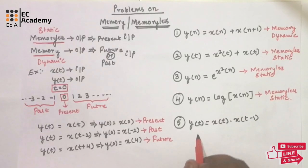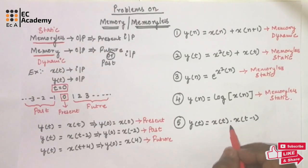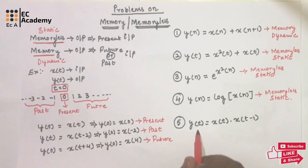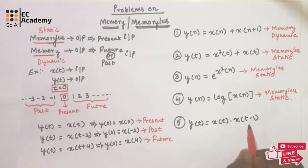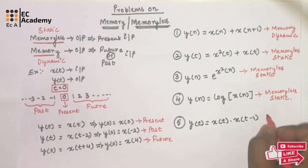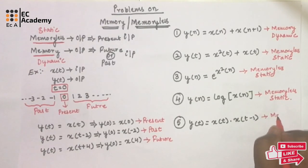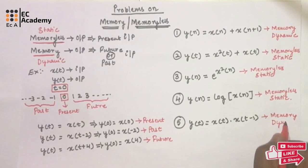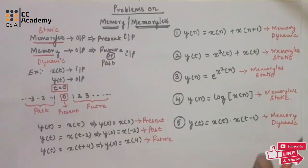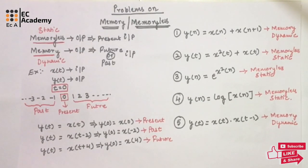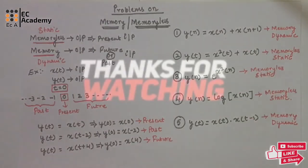Consider the fifth problem: y(t)=x(t)·x(t-1). The output depends upon the present value of the input as well as the past value of the input. Hence we can say this system is having some memory, or it is a dynamic system. These are a few problems on memory and memoryless systems. Hope you have understood the topic, thank you.